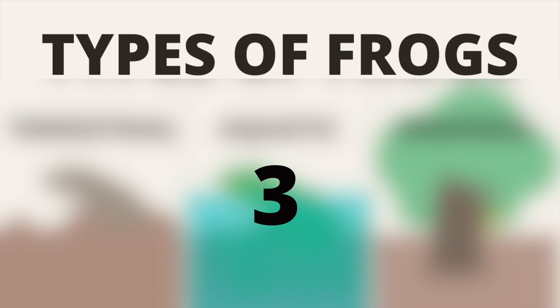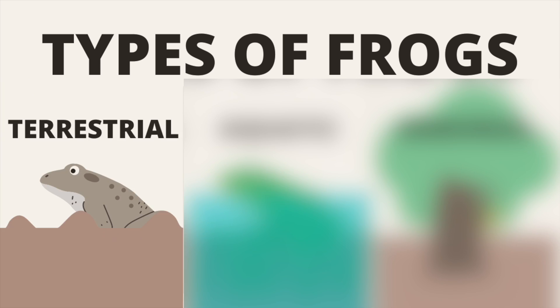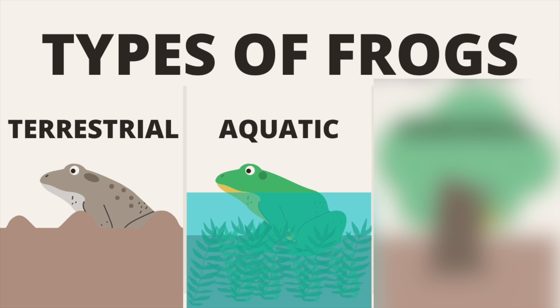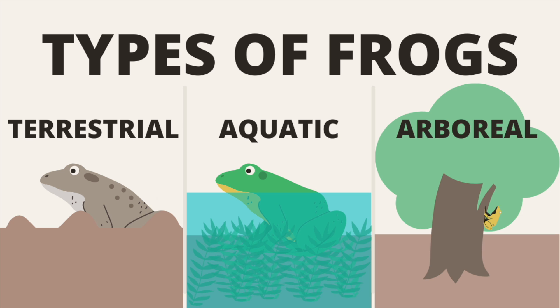Did you know that there are three different types of frogs that you can find in nature? There are terrestrial, aquatic, and arboreal frogs. Let's have a look at the differences between these super cool frogs in nature.